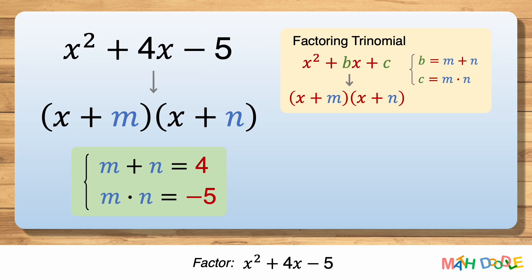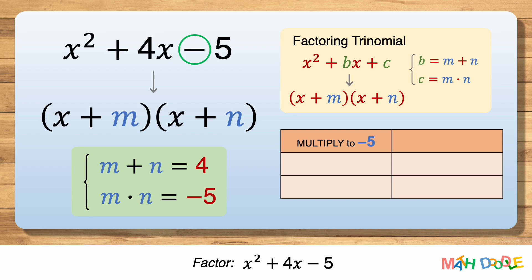First, let's think about all the combinations of two numbers that multiply to minus 5. Here the last term is negative, so we need one positive number and one negative number that multiply to minus 5.